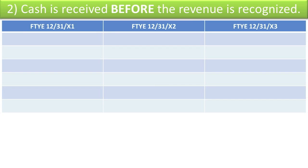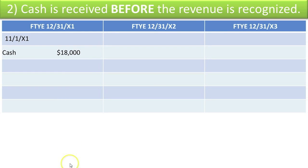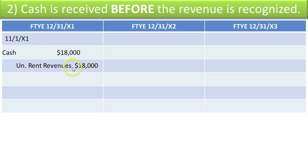Now that we have the vision of the revenue recognition in our mind, let's do the journal entries. On November 1st, cash is received, so this is a debit to cash increasing the cash account. The question is, what should the credit be to balance out this debit to cash? If we had earned all the rental revenue in X1, it would be a credit to rental revenue. But we didn't earn it yet, so we have to say we owe the tenant $18,000 worth of rental services. This is called unearned rent revenues, meaning we owe the tenant $18,000. Now as time passes, this liability will decrease and the landlord's revenue will increase.